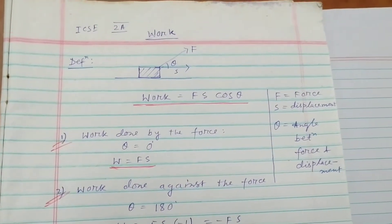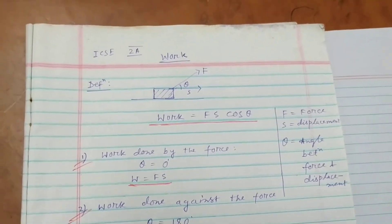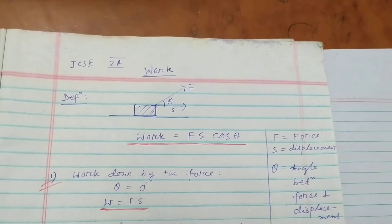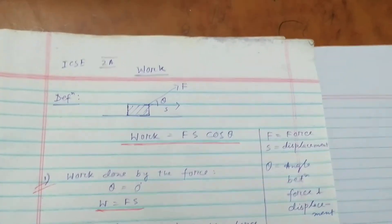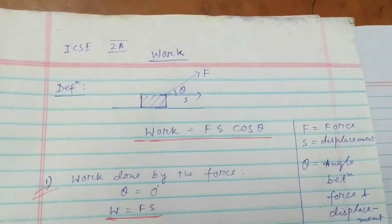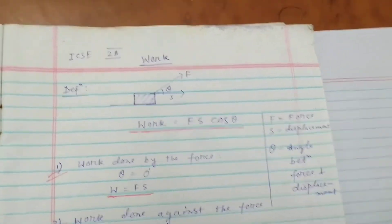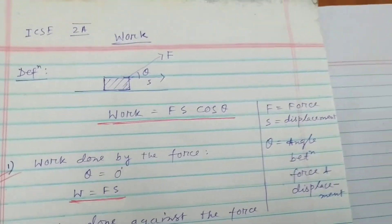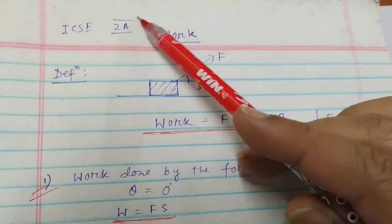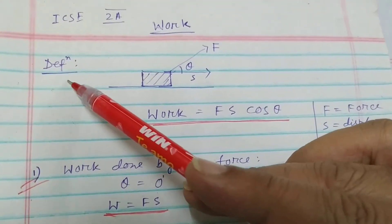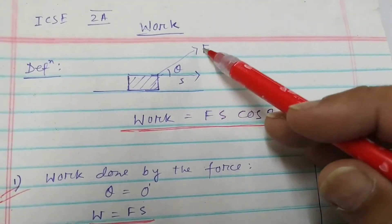Hello students, today I will describe about work. In ICSE, the second chapter is Work, Power and Energy. I will discuss about work, that is the first part of chapter 2 — I can call it 2A. So first we will start with the definition of work.